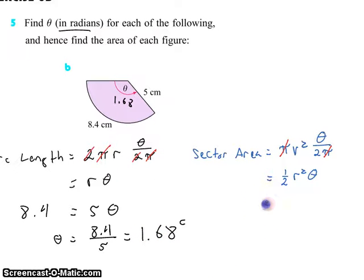We want to know the sector area. So that's 1 half times the radius, 5 centimeters, times the angle describing the sector, 1.68. 5 squared, 5 centimeters squared is 25 square centimeters, multiplied by 1 half is 12 and a half square centimeters. Multiply 12 and a half square centimeters by 1.68 and you get about 21 square centimeters.